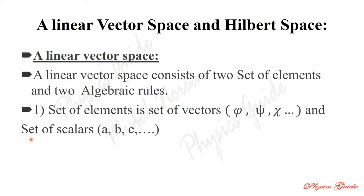Let us consider an example for understanding linear vector space. We take an equation, find a solution, then solve the same equation using a different method and get the same solution. This means we have one equation solved by two different methods giving the same result. Both solutions are linear, and their combination is also linear — this is the meaning of linearity of a vector space.